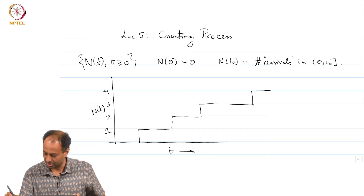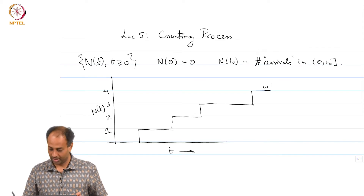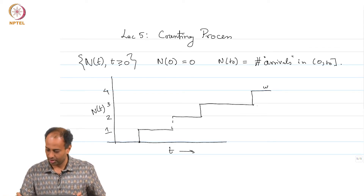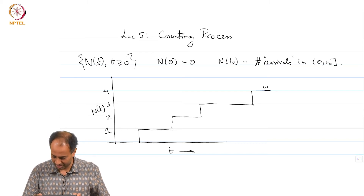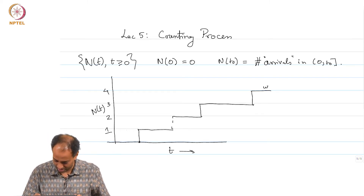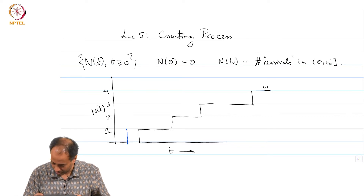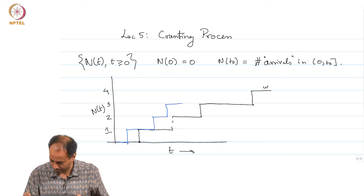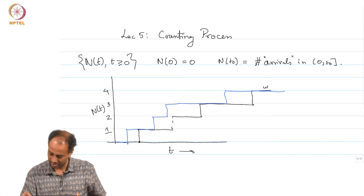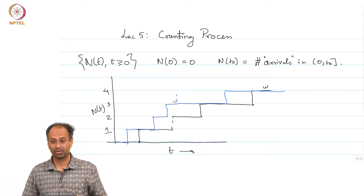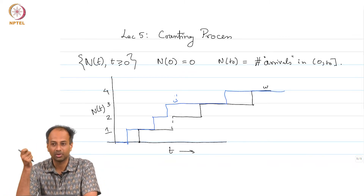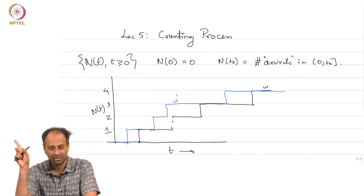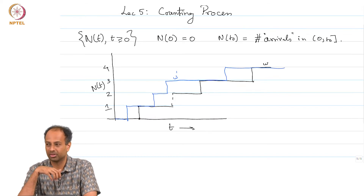This is for a particular realization ω. What we are really plotting is N(t, ω). If you had some other realization ω′, the step function would look different. Given different realizations ω, you get different step functions, and this N(t) is the counting process of interest.